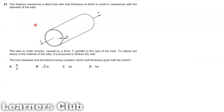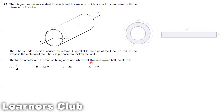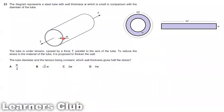The tube is under tension T. To reduce the stress on this material, we need to thicken the wall. The tension and diameter are kept constant to get half the stress. We need to find what the new wall thickness should be. First we need to take the cross-sectional area of this annulus region and identify its value.